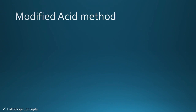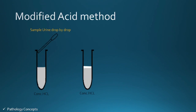In the modified acid method, concentrated HCl is placed in a test tube and urine is added drop by drop onto the upper layer of HCl using a dropper. If a ring precipitate forms at the top layer of the acid, then Bence Jones protein is considered present.